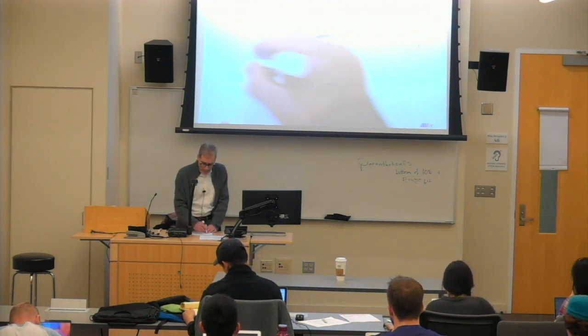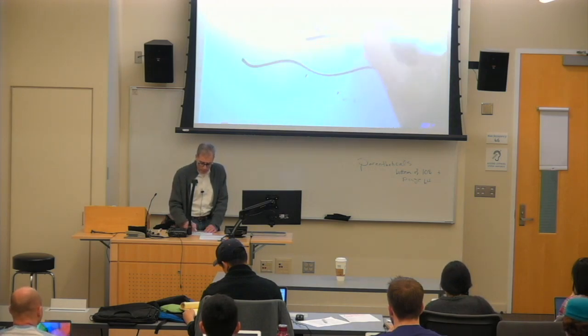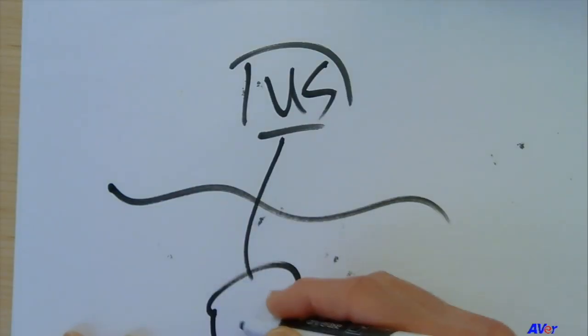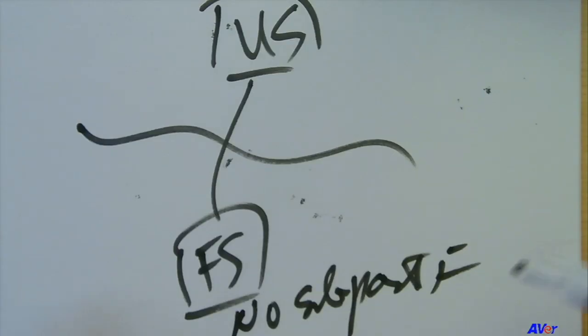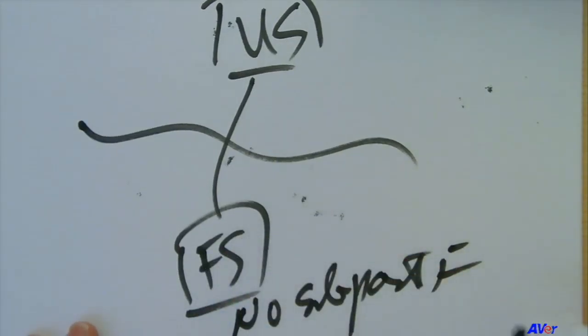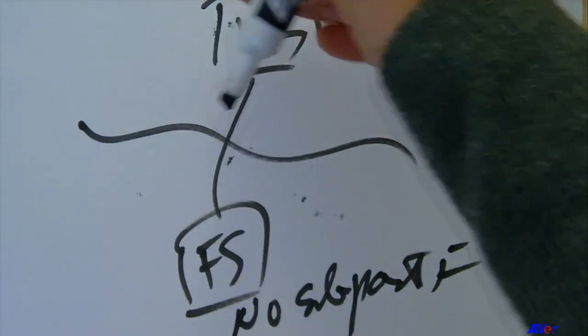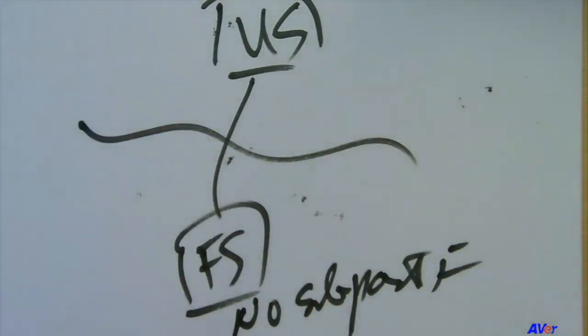Let's make it a simple one of a U.S. parent, foreign subsidiary. Let's say there's no subpart F income down here, so we don't have the offset of income being recognized in the U.S., and we'll ignore GILTI in this discussion.